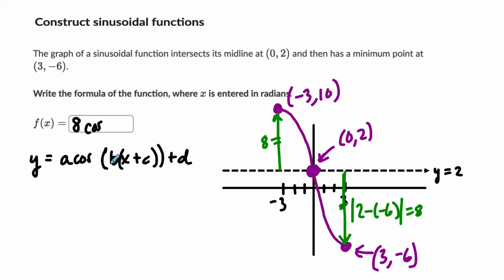Now I want to find the b value. b is equal to 2 pi over our period. And what is our period here? From 0 to 3, this horizontal distance, that again is 1 fourth of our total period. So the b value is going to be 2 pi divided by 12, and that reduces - 2 divided by 12 is 1 sixth, so it's pi over 6.